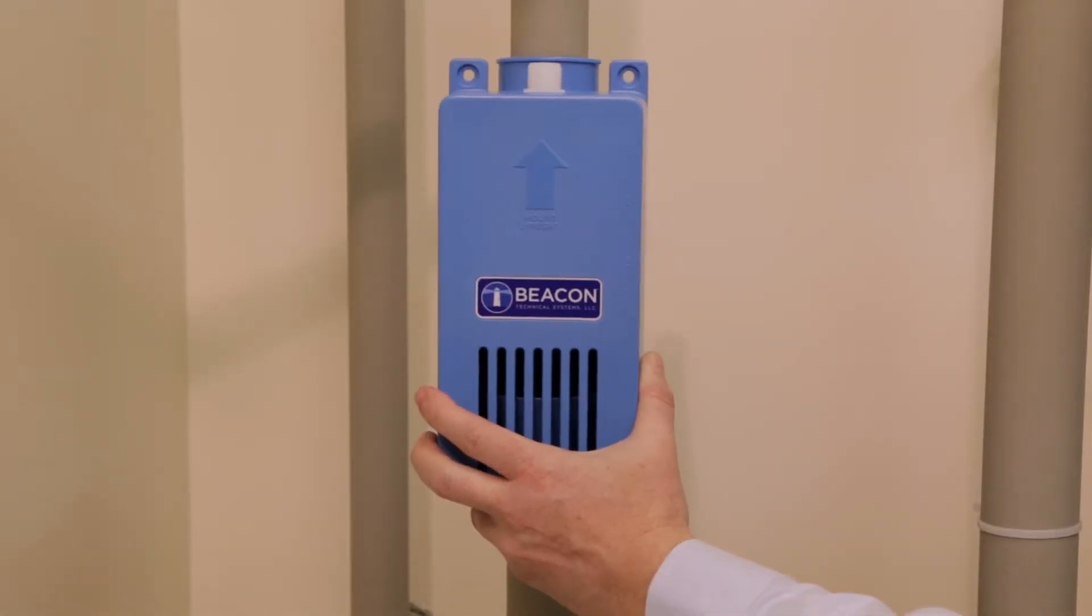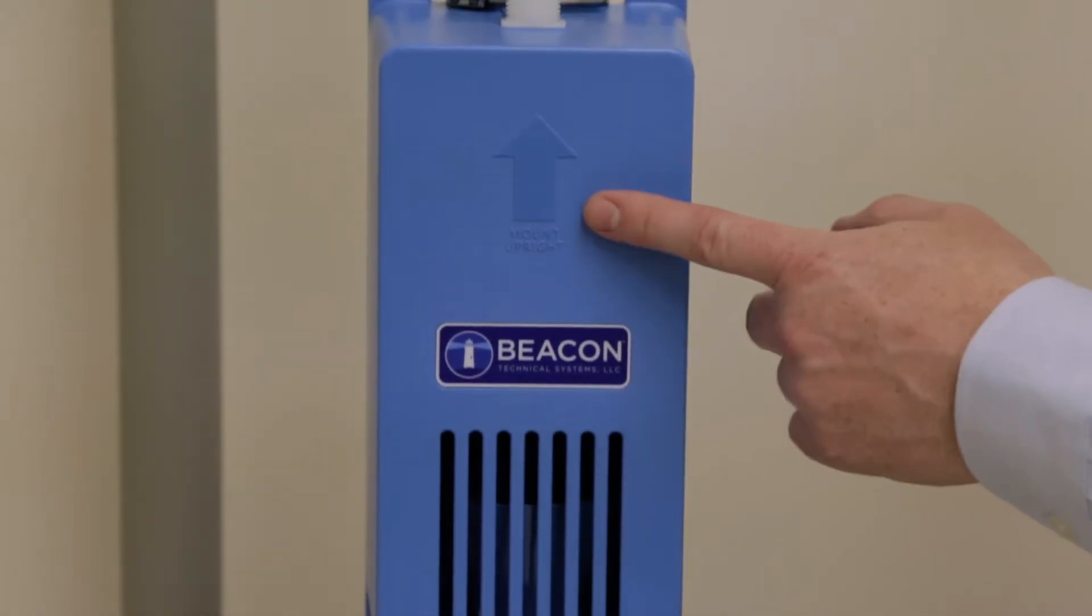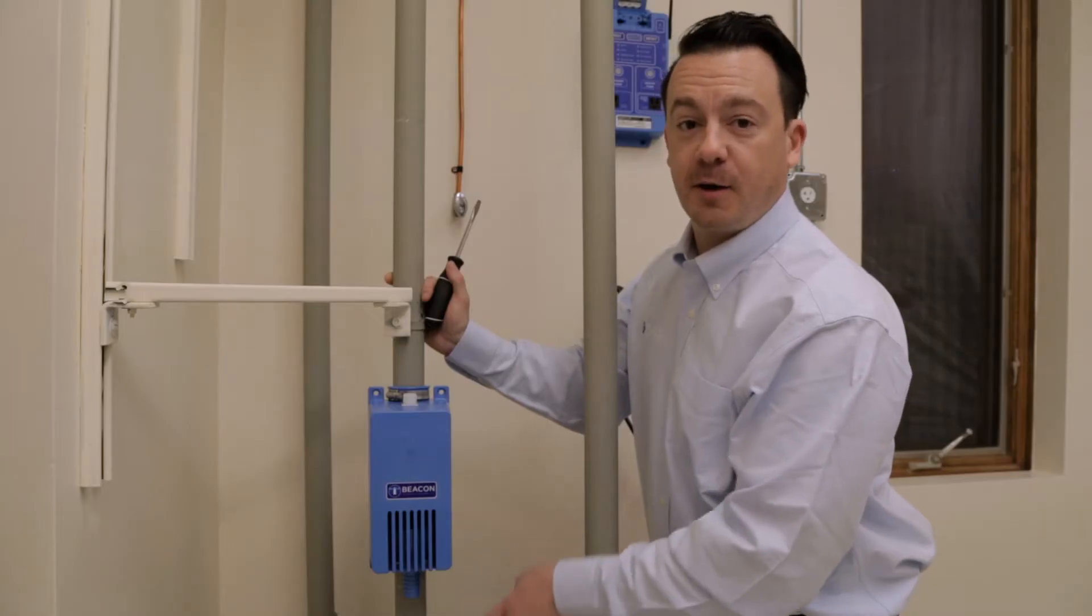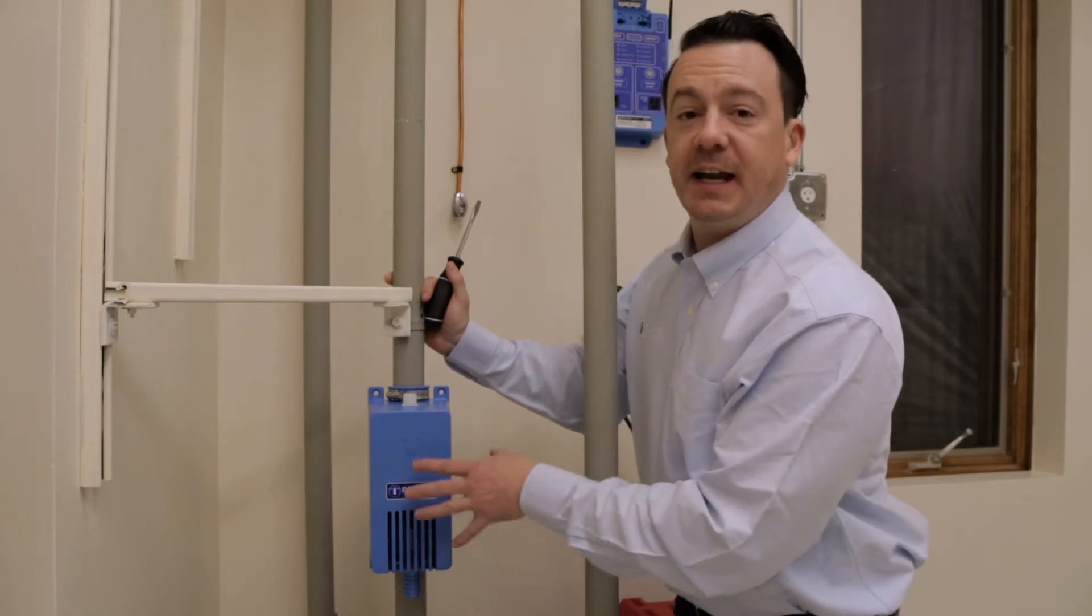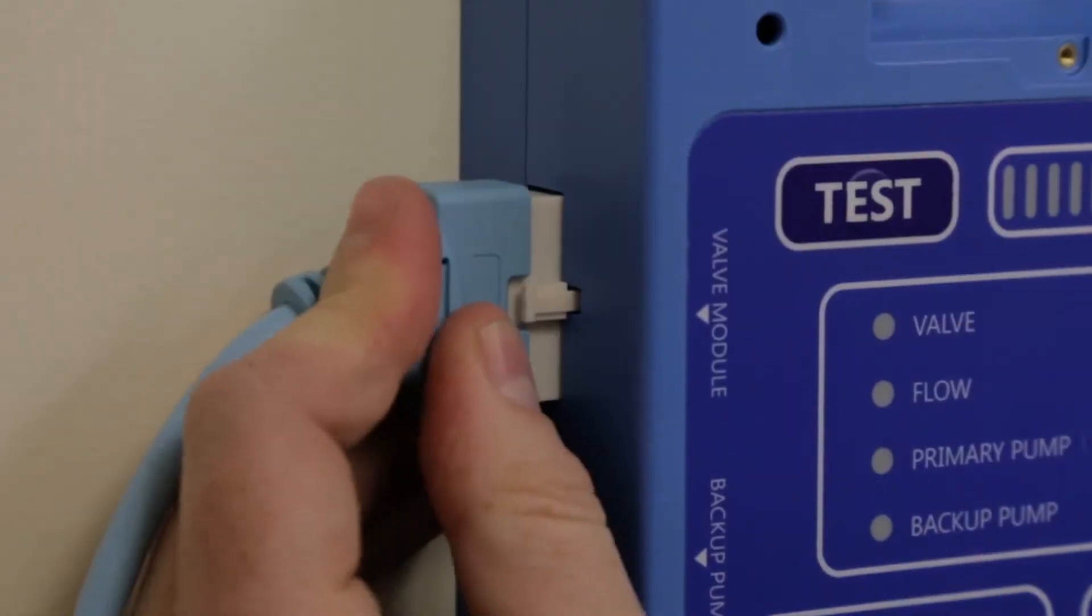Next, mount the valve module on the discharge pipe at a convenient height. It's important that you mount the module upright to ensure that water flows straight down into the sump pit. The module has a built-in air gap for backflow prevention. Use the supplied connector cable to connect the valve module to the controller.